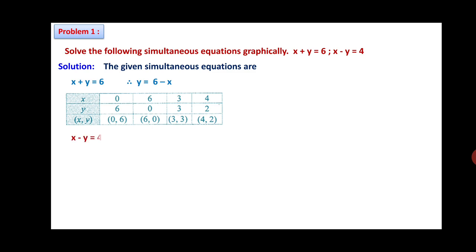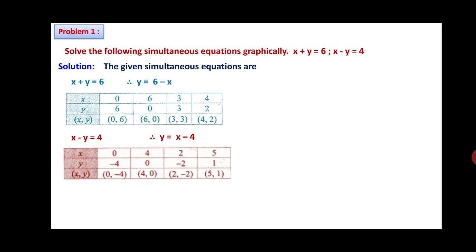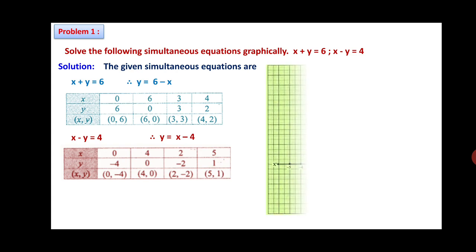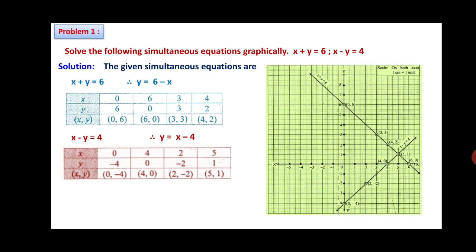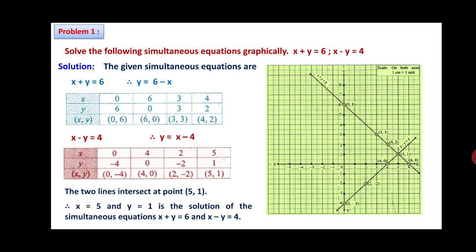For the second equation, x minus y equals 4, therefore y equals x minus 4. If x is 0, y is minus 4; if x is 4, y is 0; if x is 2, y is minus 2; if x is 5, y is 1. These coordinates are plotted on the graph paper. The two lines x plus y equals 6 and x minus y equals 4 meet in the first quadrant. The coordinates of the point of intersection are (5, 1), so x equals 5 and y equals 1 is the solution of the simultaneous equations.